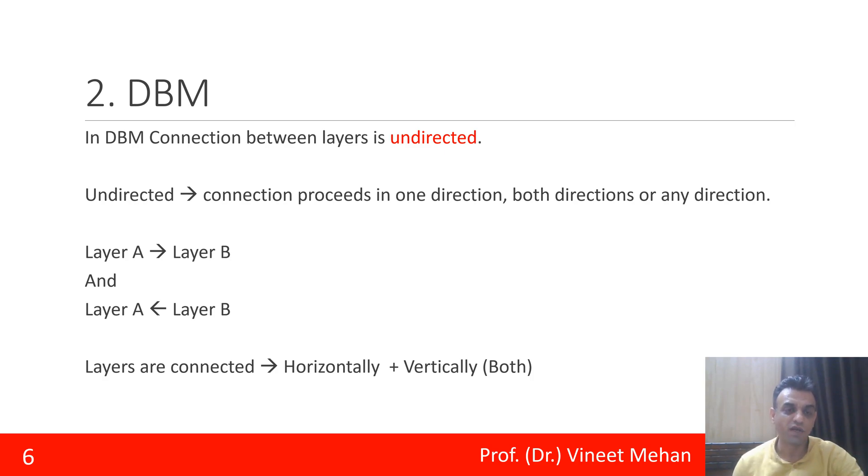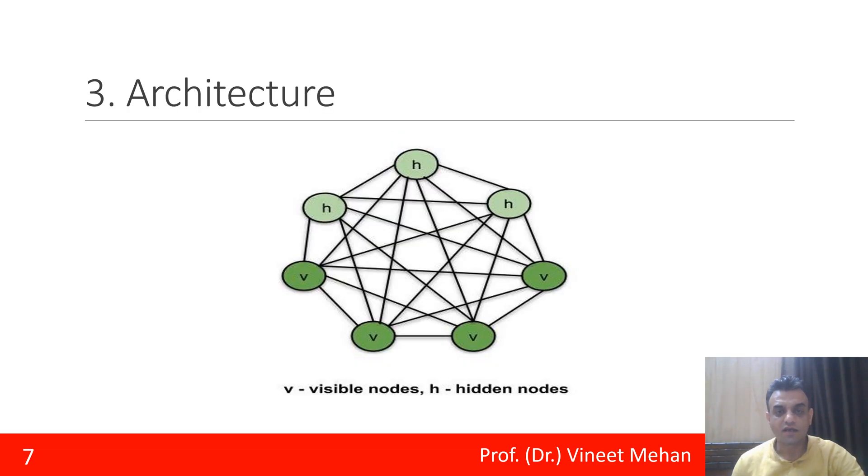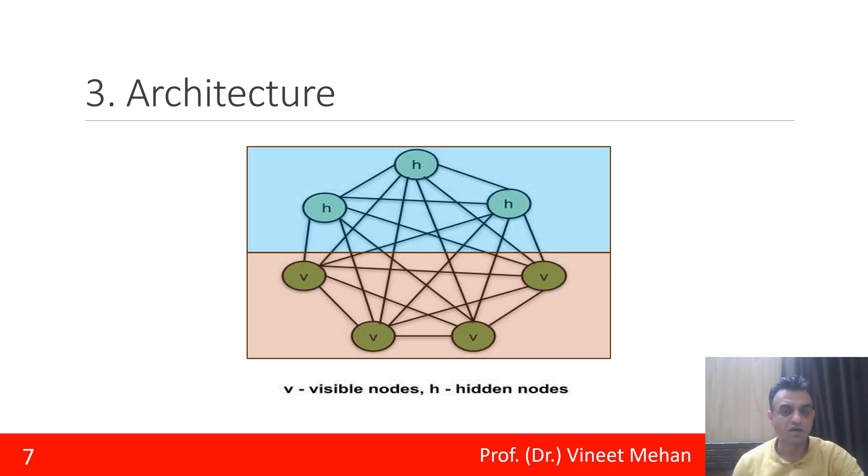Layers are connected horizontally as well as vertically, both ways. You can see this diagram. In this diagram we have this visible layer where there are four visible nodes. Similarly, above is the hidden layer where we have three hidden nodes.